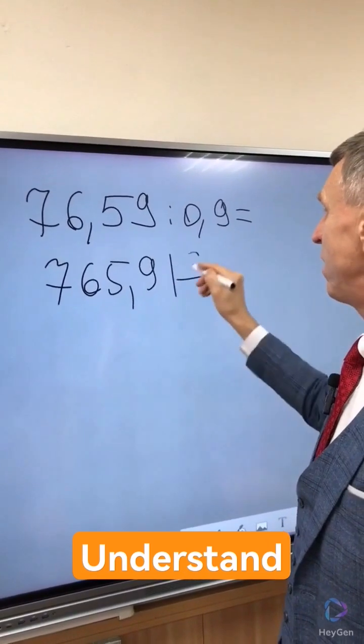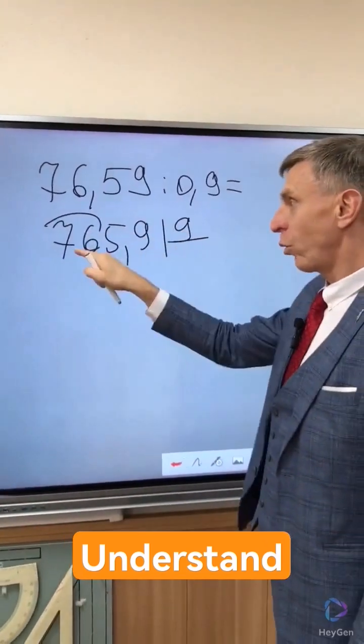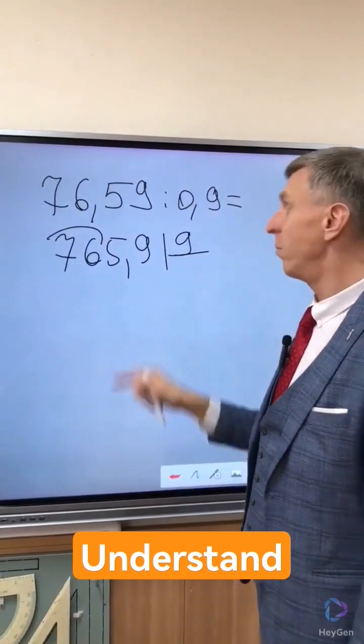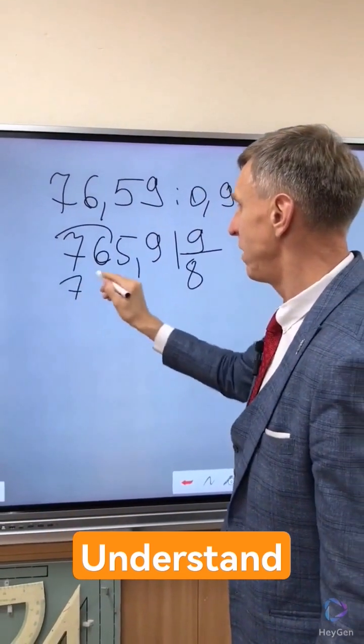765 and 9 divide by 9. Look at 7, 9 does not fit. So 76, check. Since we take 8, 9 and 8, 72, 76, 72, 4.